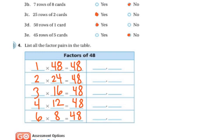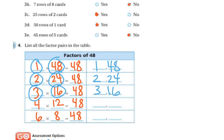So my factors are 1 and 48, 1, 48. The 2 and the 24, 2, 24. The 3 and the 16. The 4 and the 12. The 6 and the 8.